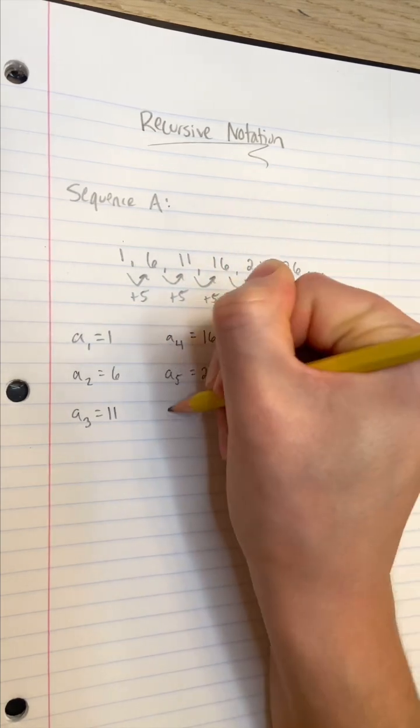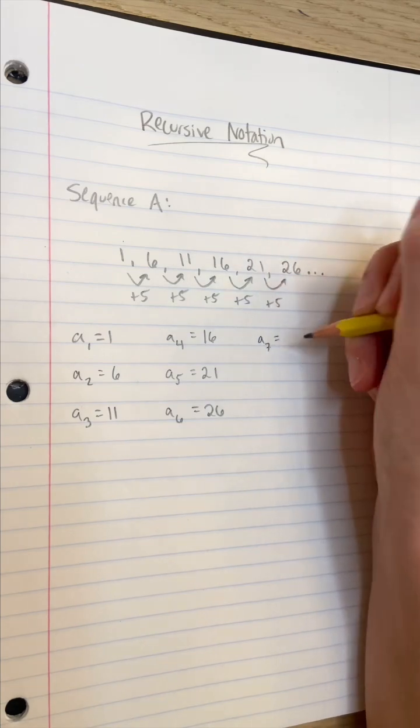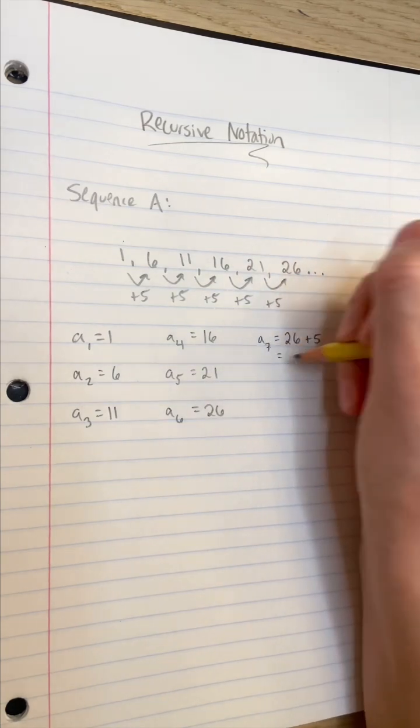So what's A sub 7? Well, let's continue our pattern and add 5 to 26. In other words, add 5 to A sub 6, and we get 31.